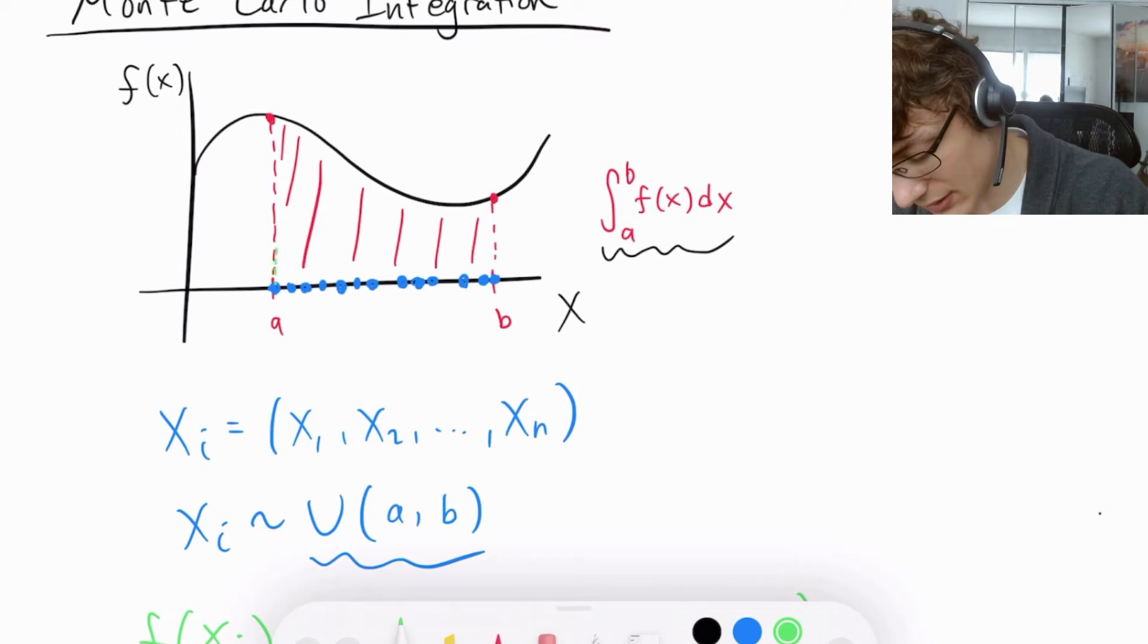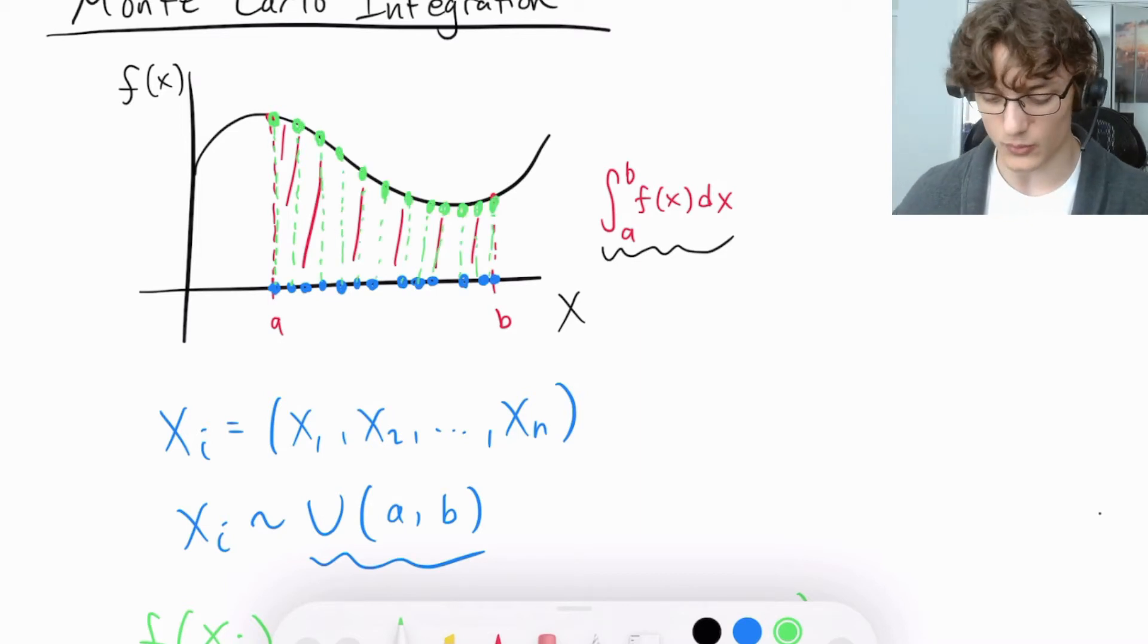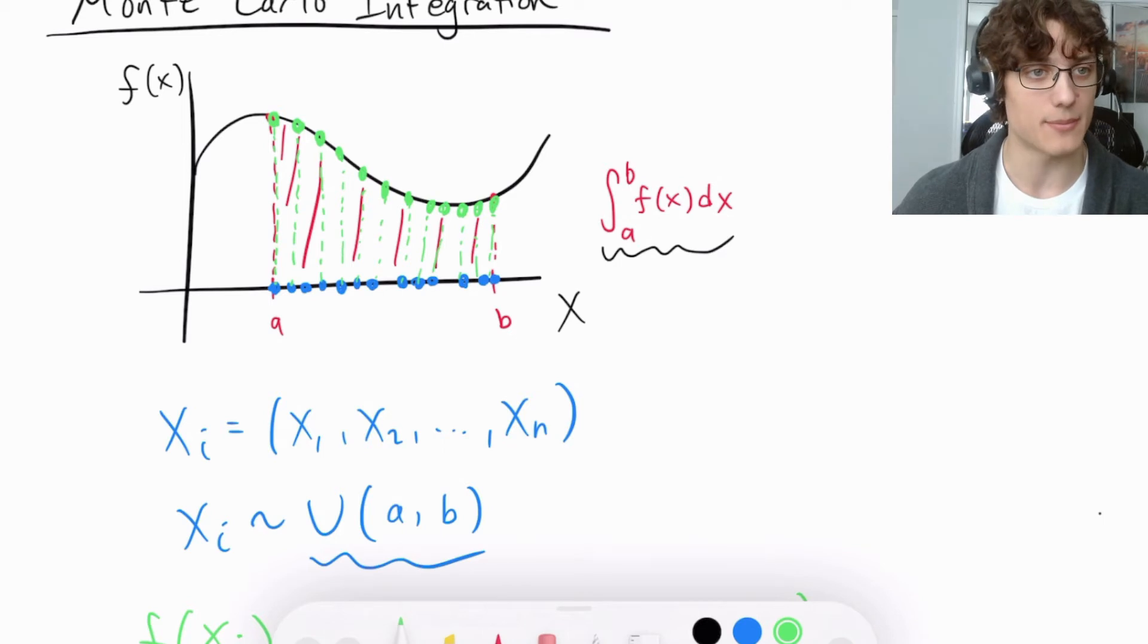And we end up with this collection of function values corresponding to each point in the domain. So this point here is going to correspond to this functional value, this point to this one, and so on and so forth. We have all of the corresponding functional values at each of the points we've randomly sampled.